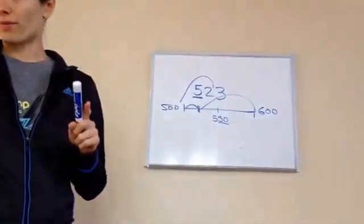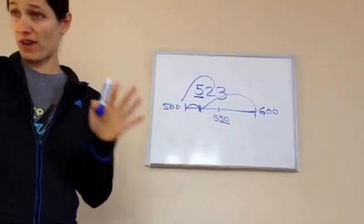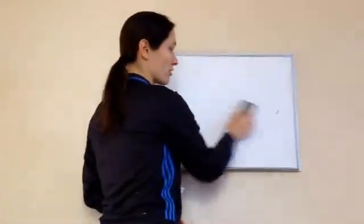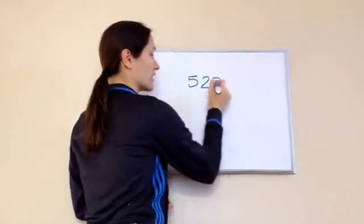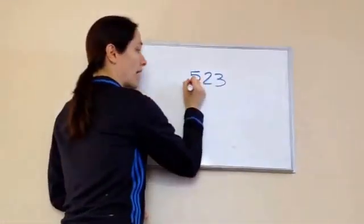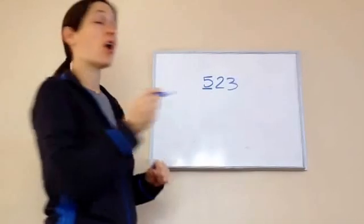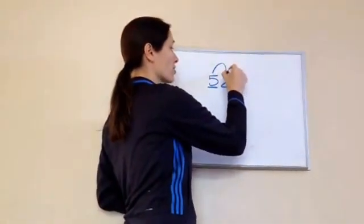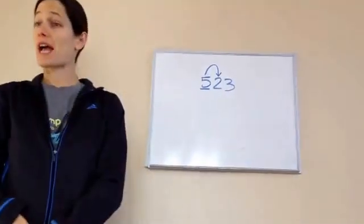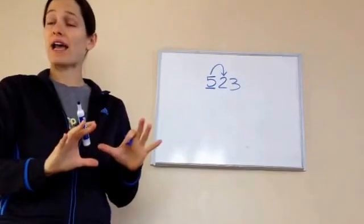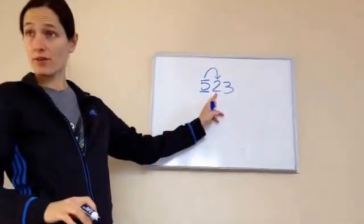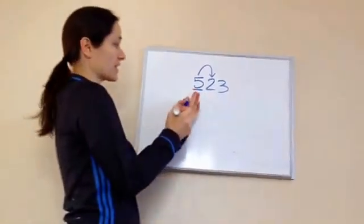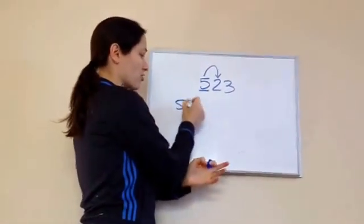Okay, another way that you may learn when you get older, and if you don't like this way, it's fine, but another way that you can do this: if I told you to round to the nearest hundred, you're going to underline it. Then you're going to always look to the number to the right, and you're going to ask yourself, is it 5 or higher? No. So, this number stays the same, and then you just add your zeros.